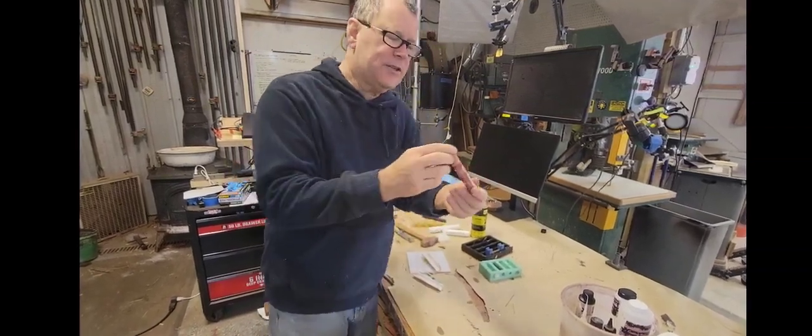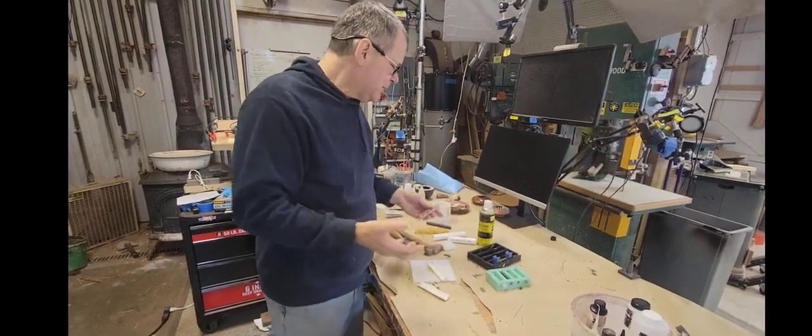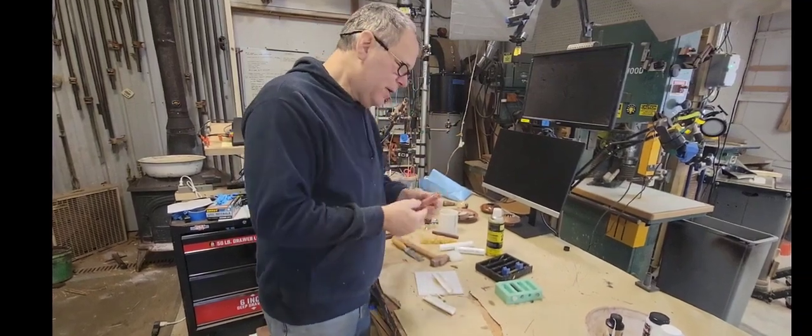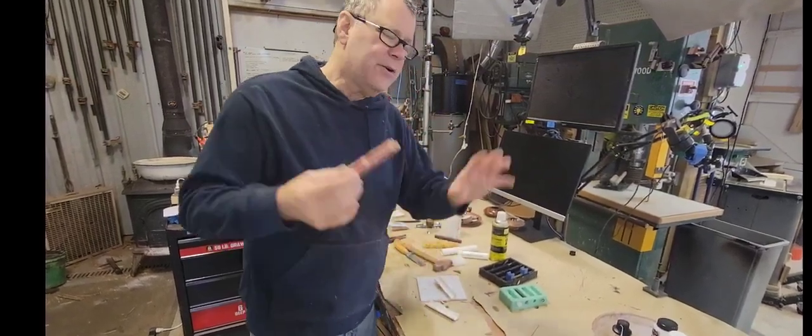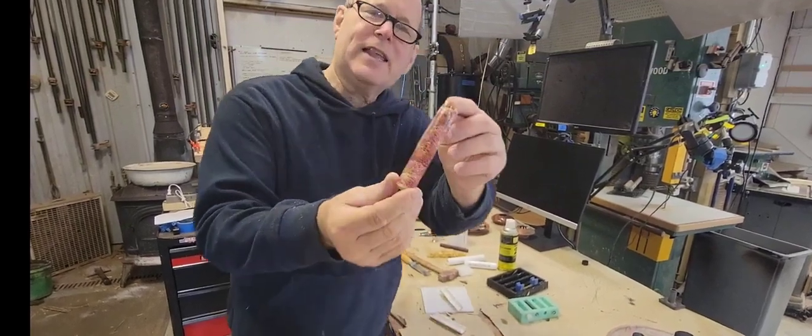But yeah, I think that's a great way if you want to get into making your own blanks for turning using Easy Inlay material or natural filler material or what have you. These were cast with epoxy. Urethane casting is a whole other thing there. So check that out.